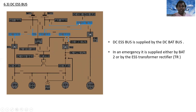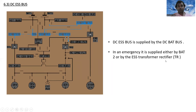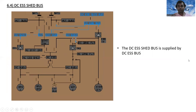The DC essential bus is supplied by the DC battery bus. In an emergency, it is supplied either by battery two or by the essential transformer rectifier. The DC essential shed bus is supplied by the DC essential bus.